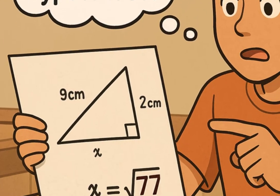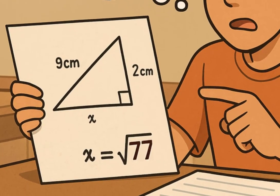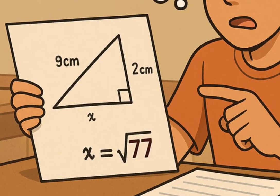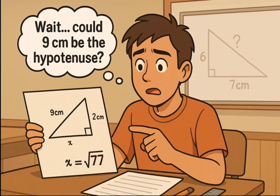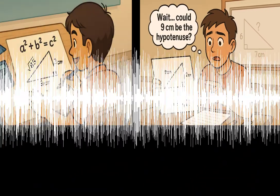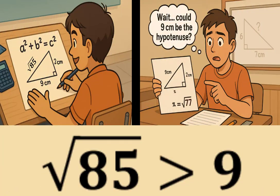We subtract two squared from nine squared, 81 minus four, which gives 77. So the other leg would be square root of 77, and the hypotenuse is just nine. So depending on how we interpret the sides, the hypotenuse in option A is either square root of 85 or just nine.